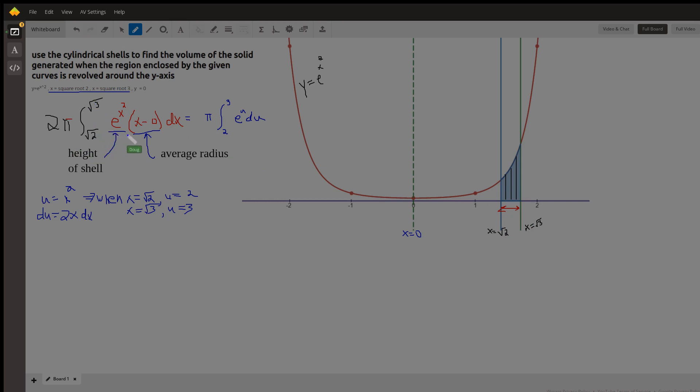The integrand is the height of the shell, which is e to the x squared, times the average radius. And the average radius is the distance from the axis of revolution to the center of a shell. So for each shell, each shell is x units to the right of the y-axis.